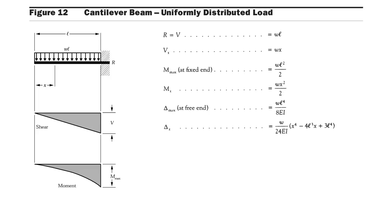A cantilever beam carries a uniformly distributed load, as shown in figure 12. In this case, the maximum bending moment occurs at the fixed end and the maximum deflection occurs at the free end. The maximum bending moment value is wl² / 2, and the maximum deflection value is wl⁴ / 8EI.